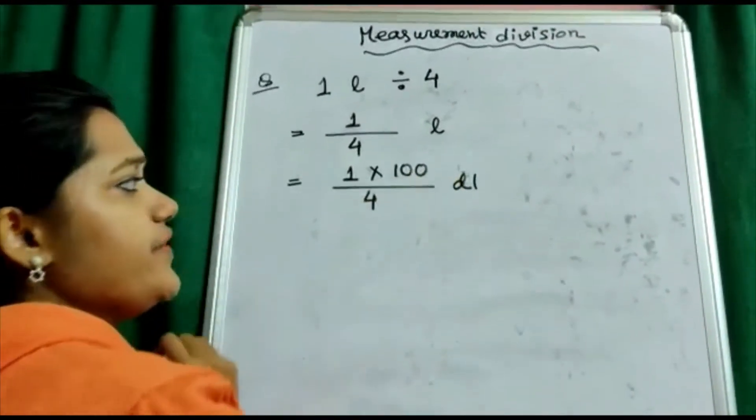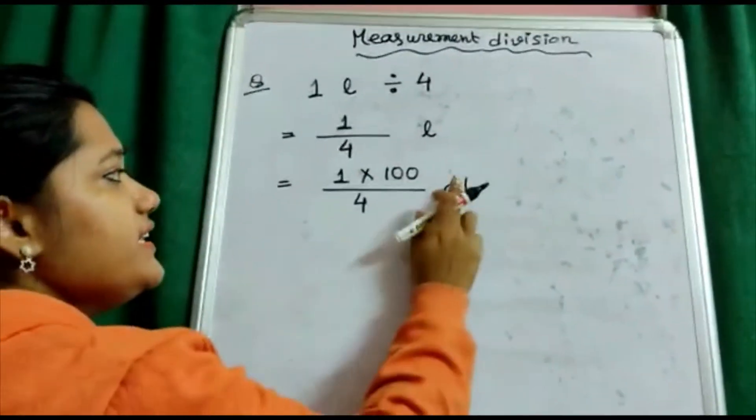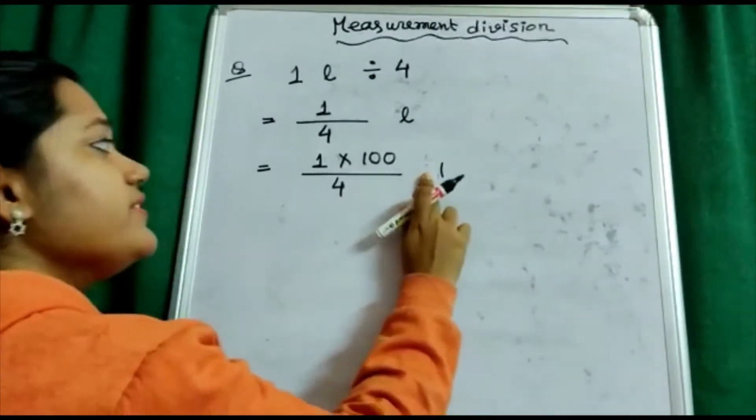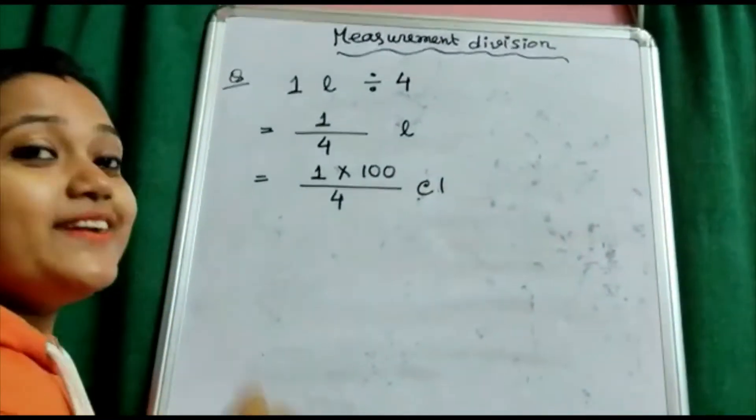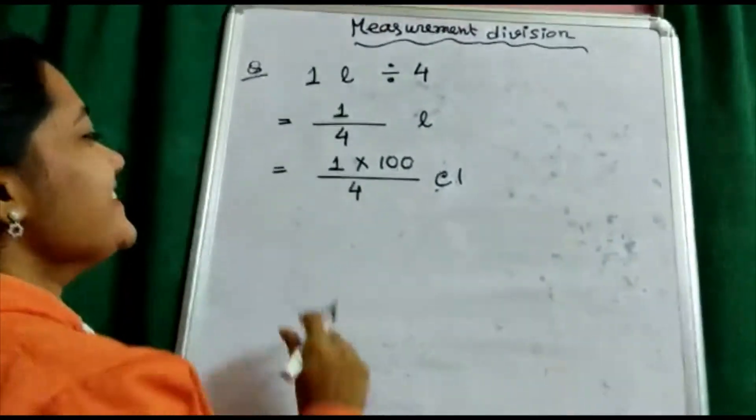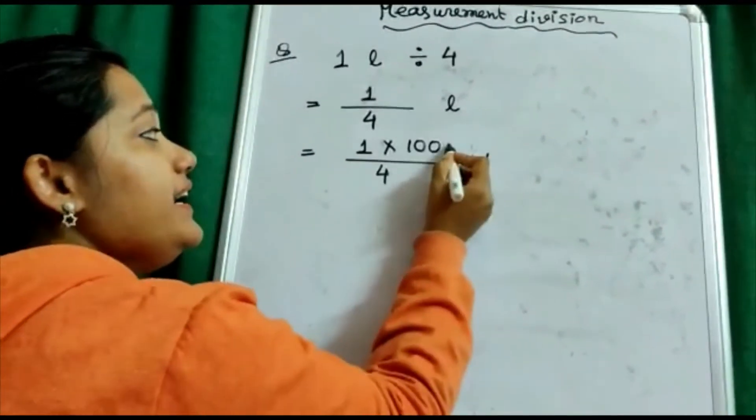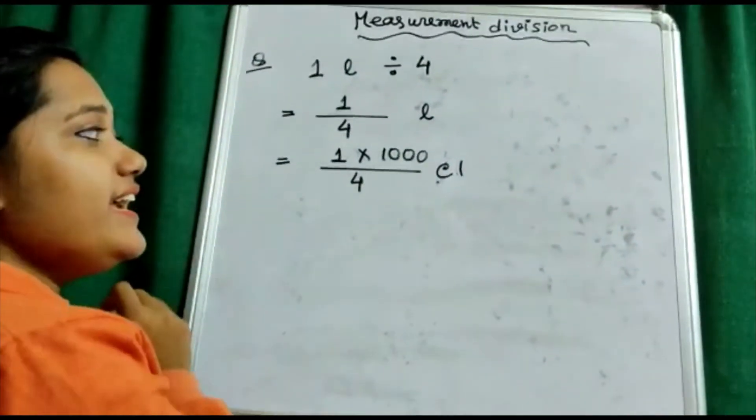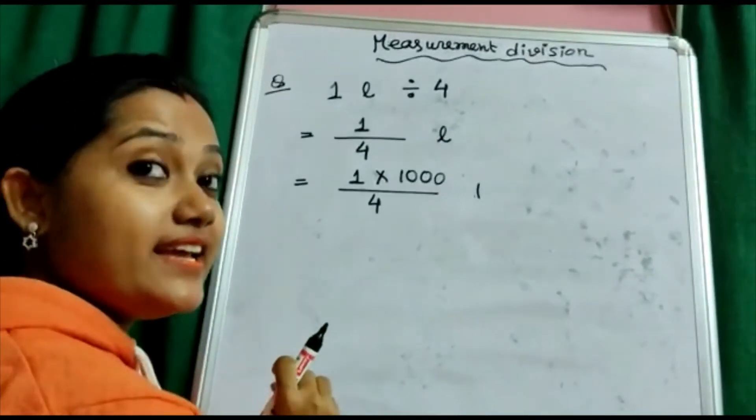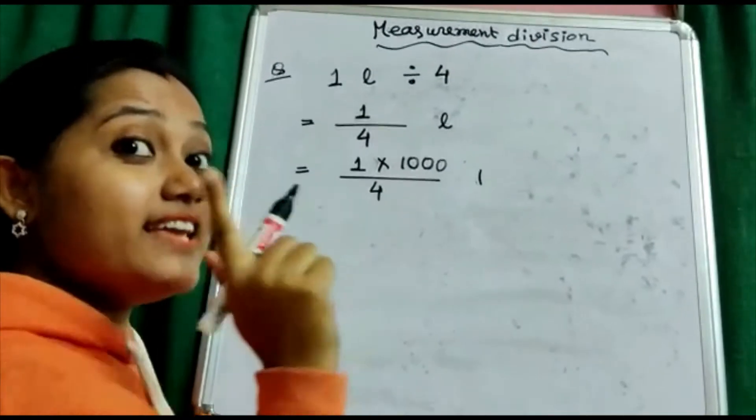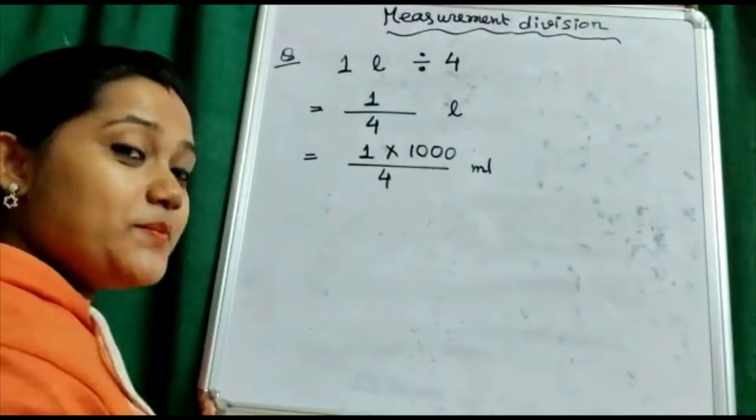If I am doing it by 100, then the unit will be deciliter and after that, centiliter. You are absolutely correct. Or if I am multiplying it by 1000, then I will get milliliter.